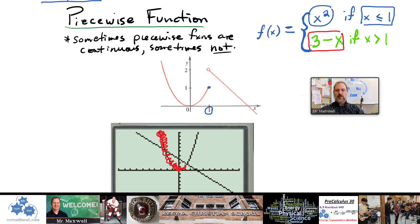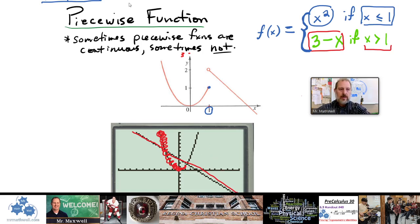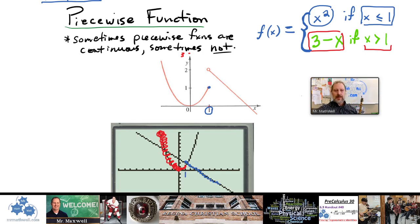The second piece is the line (3 − x). It has a slope of negative one and a y-intercept of 3. It only exists where x is greater than 1, so we don't use the entire line — only the piece that comes from x = 1 downward. You can see from the graphing calculator where we get these pieces from.